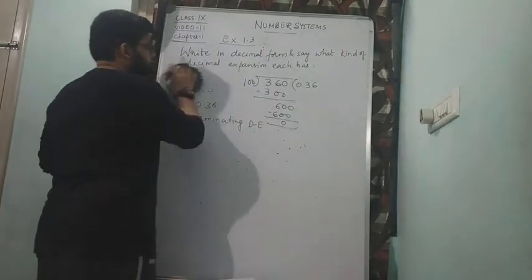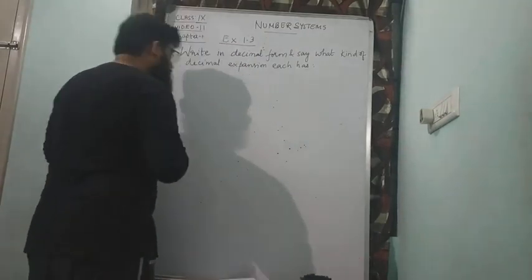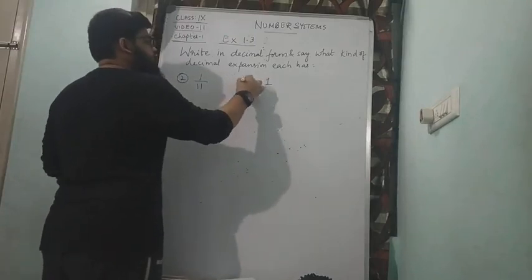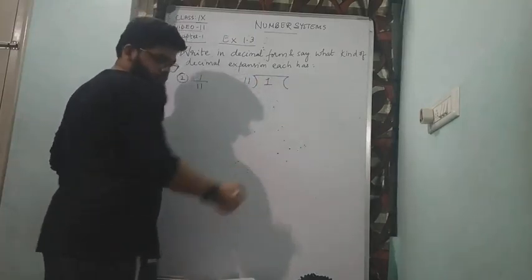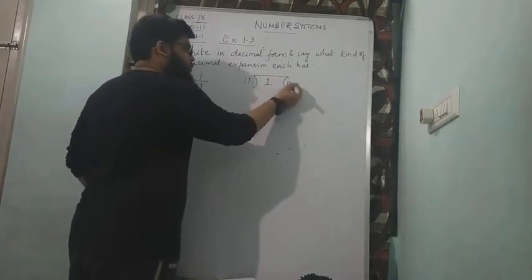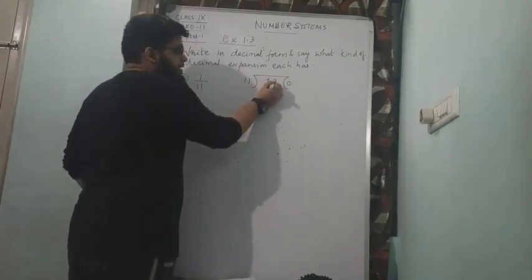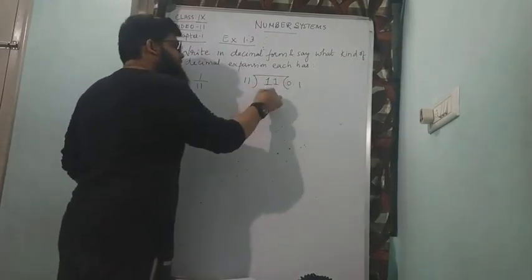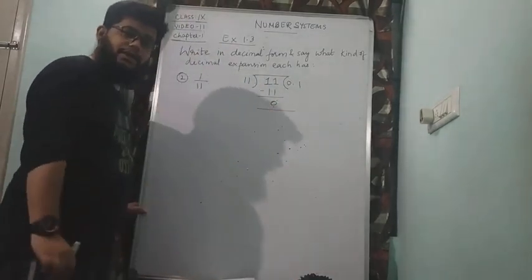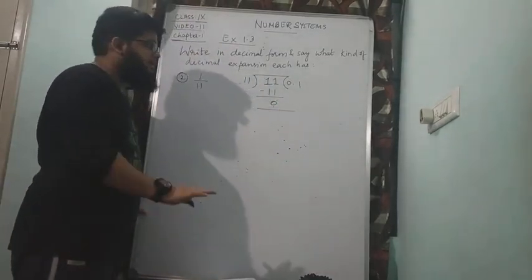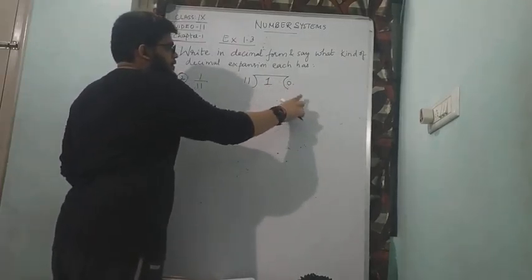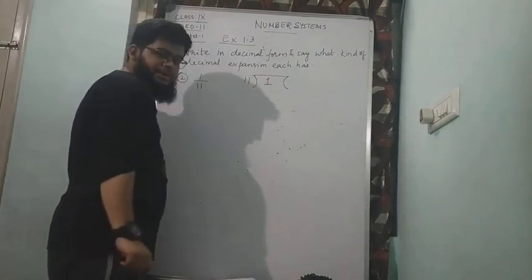So I will go with one more: 1 by 11. That means 1 should be divided by 11. Obviously 1 does not come in the table of 11. So now I will take 0 point. It was 1 and 1 was supposed to be divided by 11. 1 does not come in the table of 11, so we take 0 point.